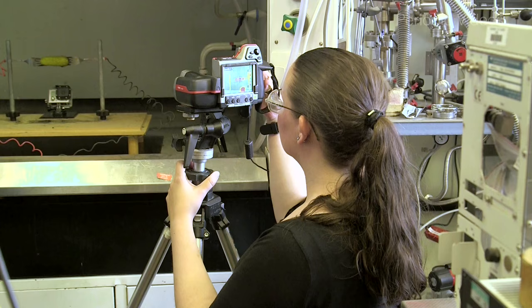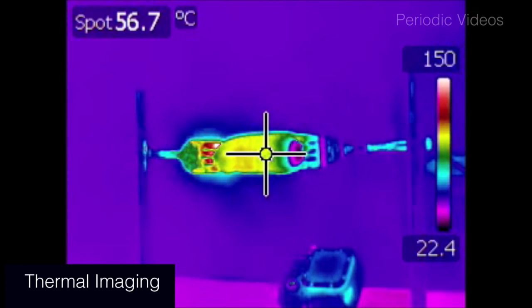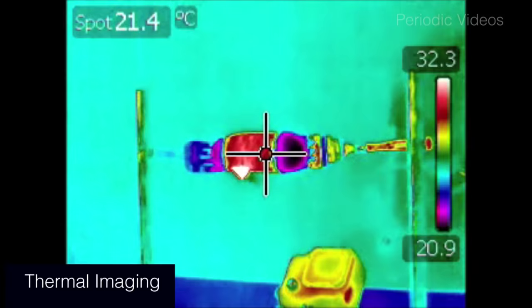So we decided to use a thermal imaging camera. The first thing that I noticed is you can see the steam coming out of the gherkin because the steam is hot and therefore is picked up by the camera. Whereas our camera barely noticed it in the dark.